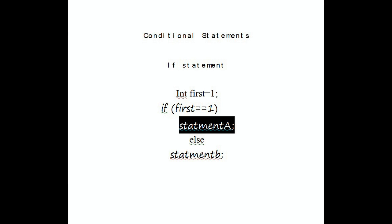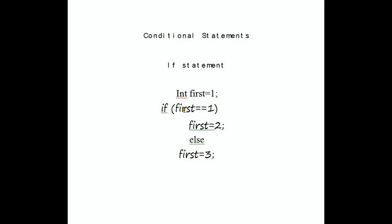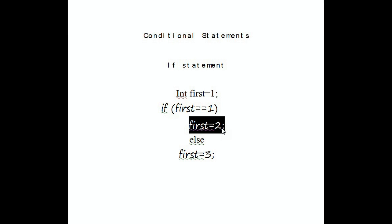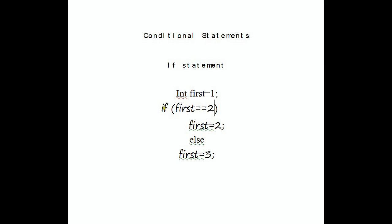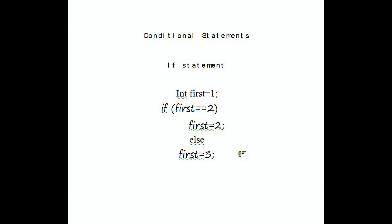We write the variable name with two equal signs, meaning compare — if we used only one equal sign we'd get an error. In the statement part, let's say we change the value to two. The else section would assign the value three. So the if statement checks if 'first' equals one; if true, it sets 'first' to two. If not true, it goes to the else part and assigns three to 'first'. You don't have to have the else part.